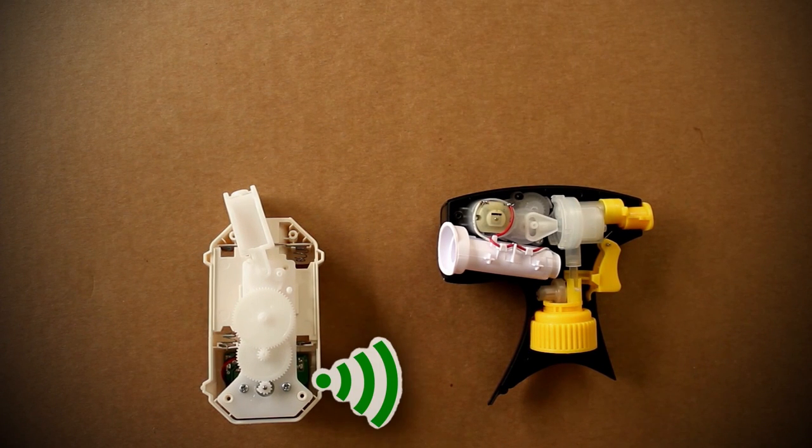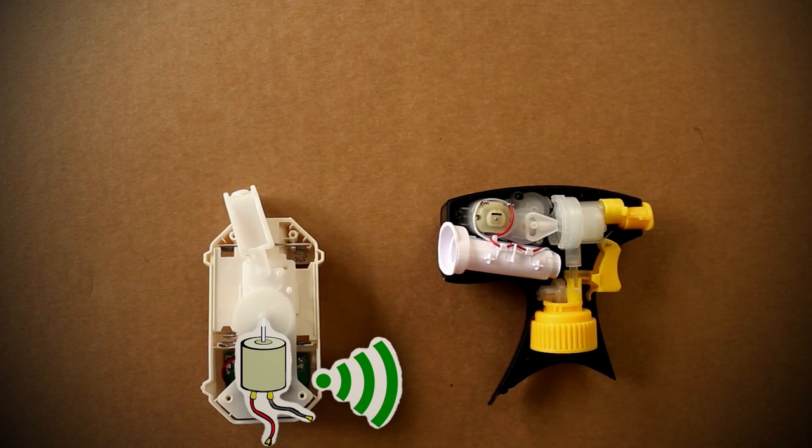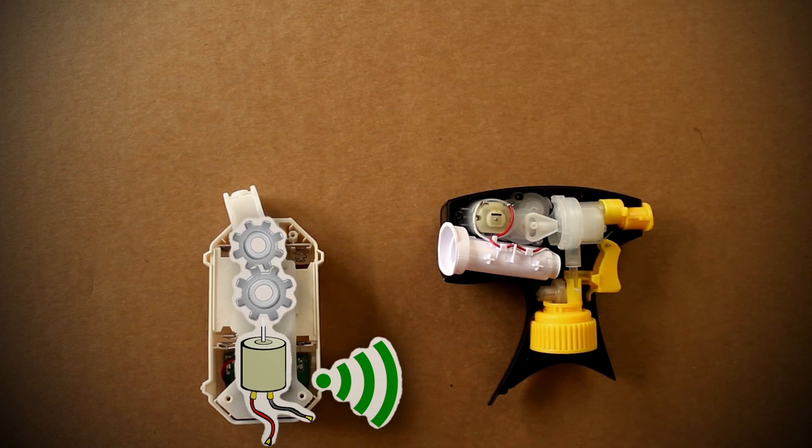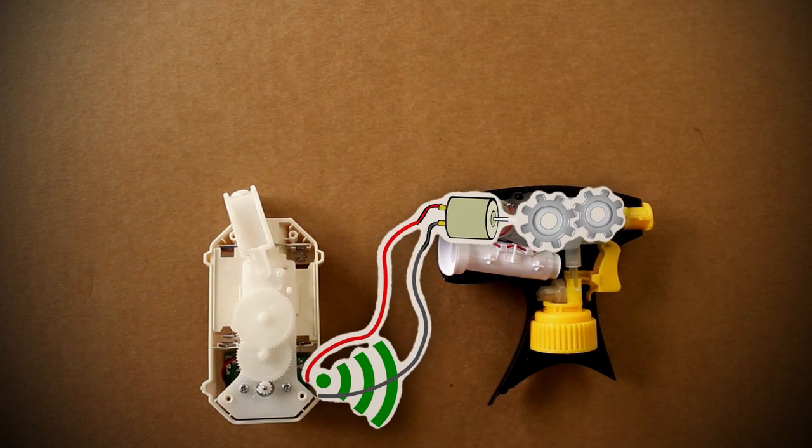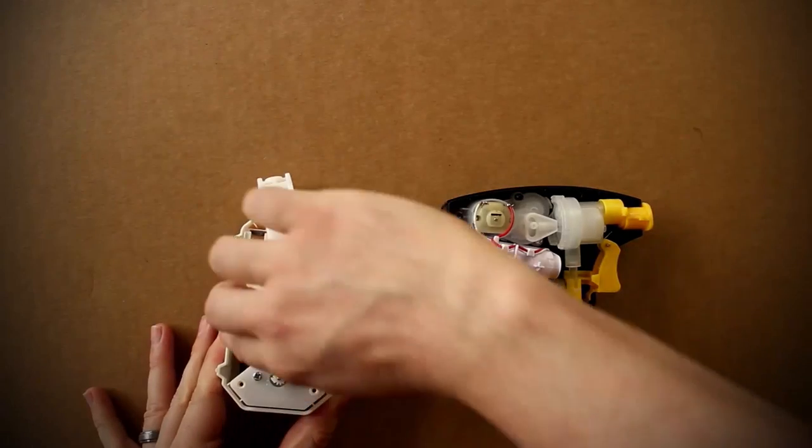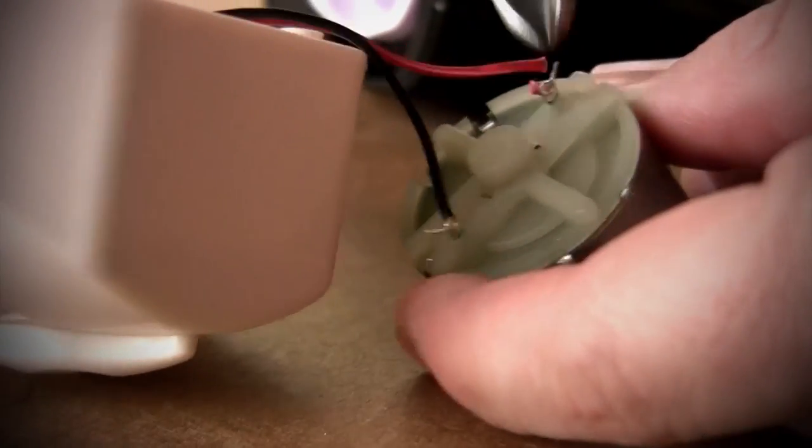We want the motion detector on the air freshener to trigger the automatic sprayer. Right now it's only triggering this motor, which activates the arm to release. So instead of the wires running to this motor, let's see if we can run them to that motor. Go ahead and unscrew and remove the gearing system, then cut the motor from the wires and strip the ends.